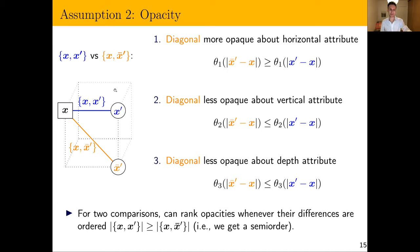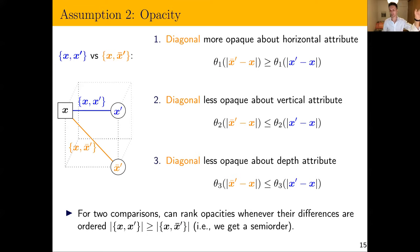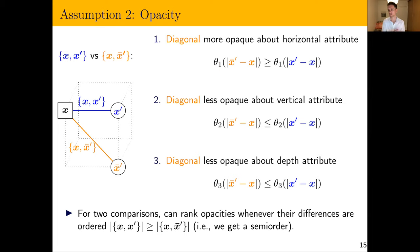In general, for any two comparisons we can rank the opacities for each attribute, provided their differences are ordered in a vector sense. If one comparison has a difference on one attribute and another on a different attribute, we can't rank them. But if we can write a vector inequality ranking those differences, we can rank the opacity. So we get a semi-order — we can compare opacity for some comparison sets but not others.